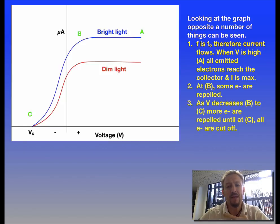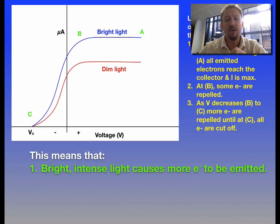So what do we pick up overall? This means that bright intense light causes more electrons to be emitted. We can see this because we've got a higher current which is generated. More electrons are emitted which means we're going to get more current which is going to flow.